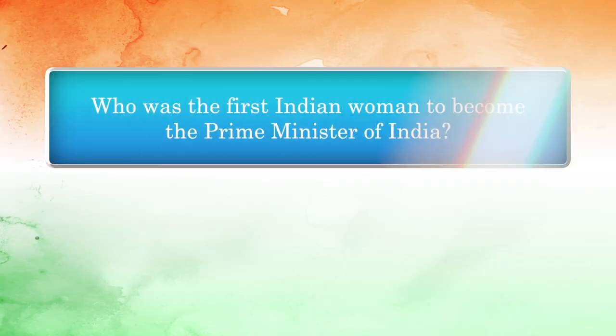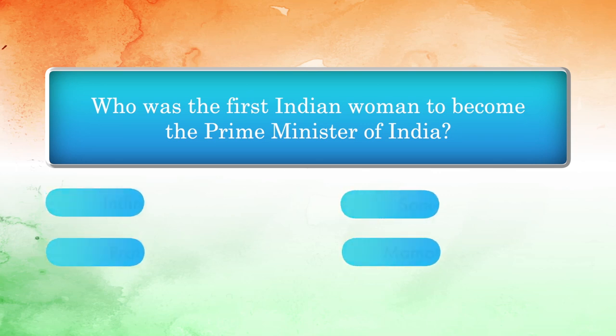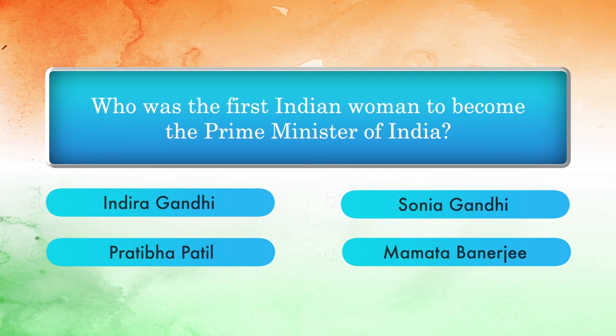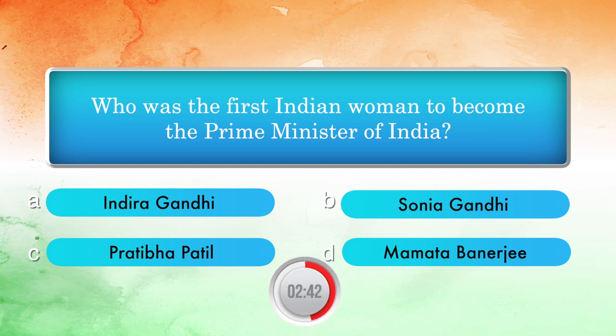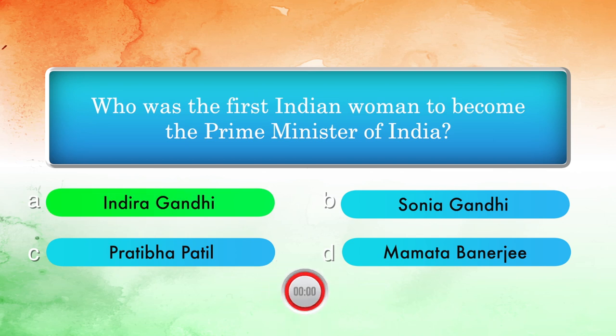Who was the first Indian woman to become the Prime Minister of India? Options: Indira Gandhi, Sonia Gandhi, Pratibha Patil, Mamata Banerjee. Answer: Indira Gandhi.